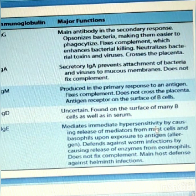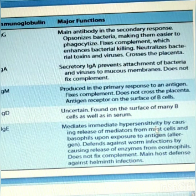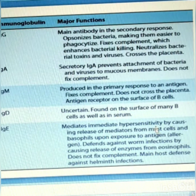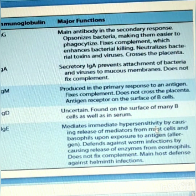Considering the major functions of different isotypes: IgG is the main antibody in the secondary response. It opsonizes bacteria making them easier to phagocytize, fixes complement which enhances bacterial clearing, neutralizes bacterial toxins and viruses, and crosses the placenta. IgA is a secretory antibody that prevents attachment of bacteria and viruses to mucosal membranes. IgM is produced in the primary response, fixes complement, and serves as an antigen receptor on the surface of B cells.